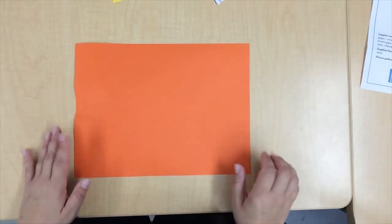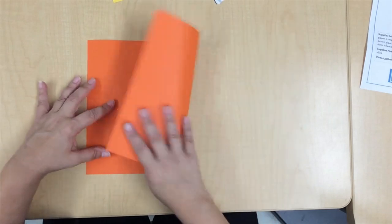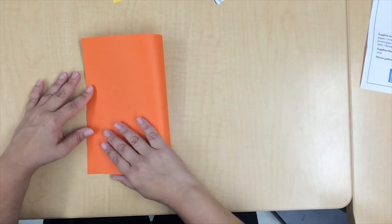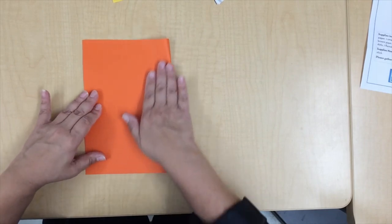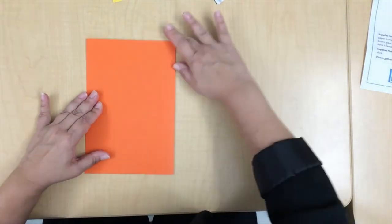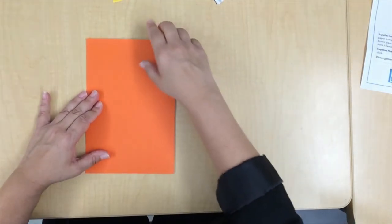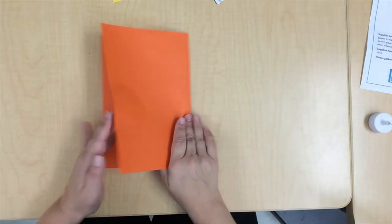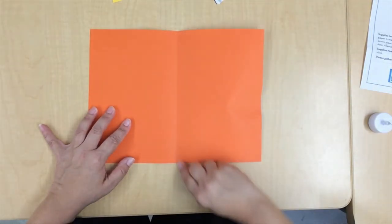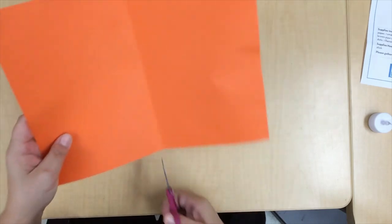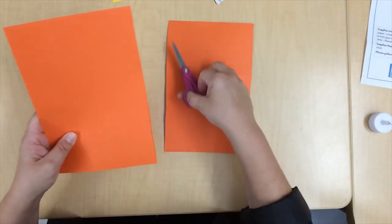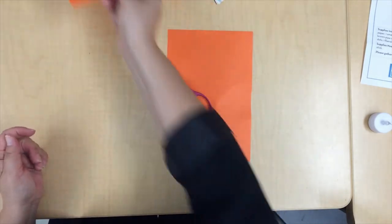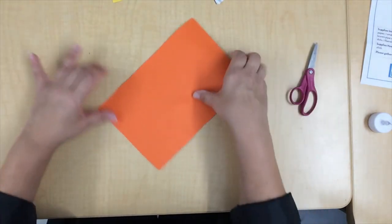First we're going to start with our orange piece of construction paper. We're going to fold it in half the long way, lining up the edges as best you can. Next we'll open it up and cut along this line. Put one piece aside.